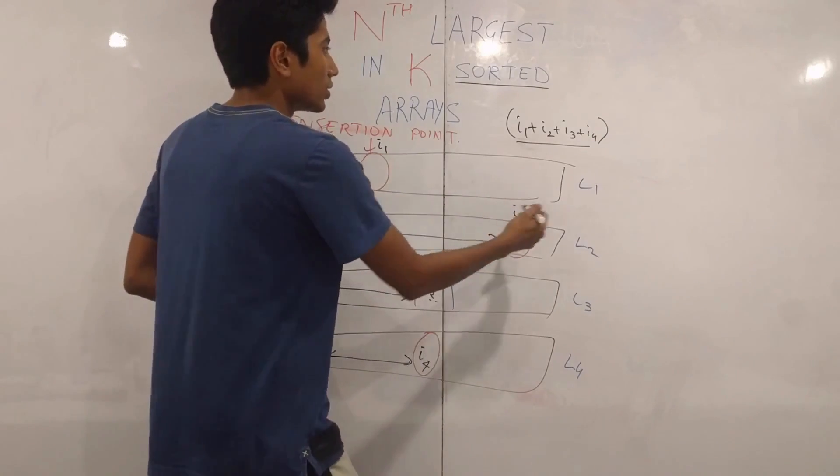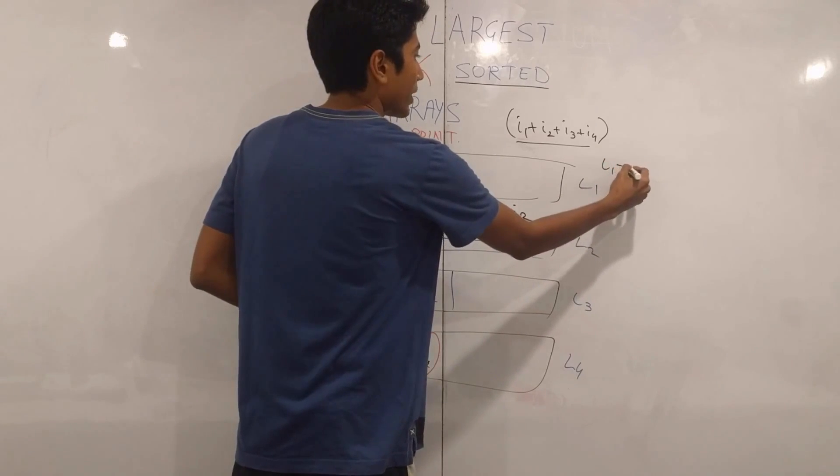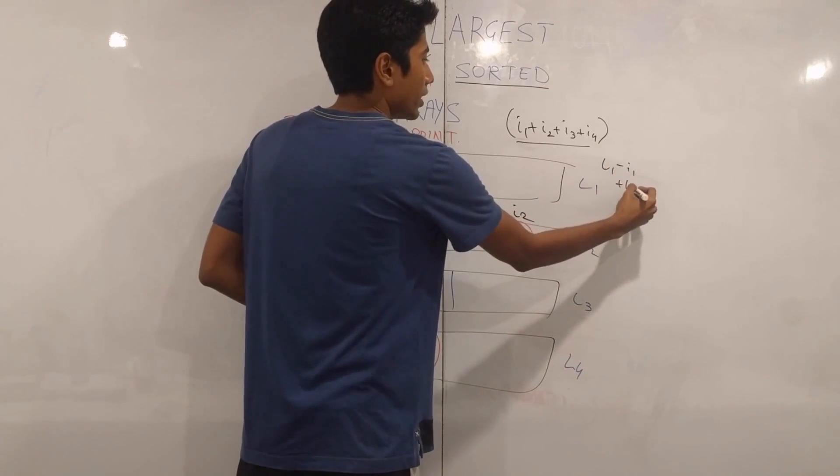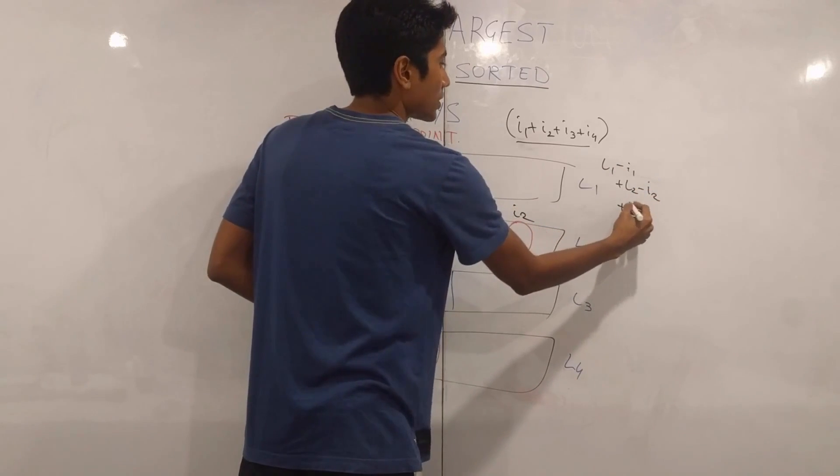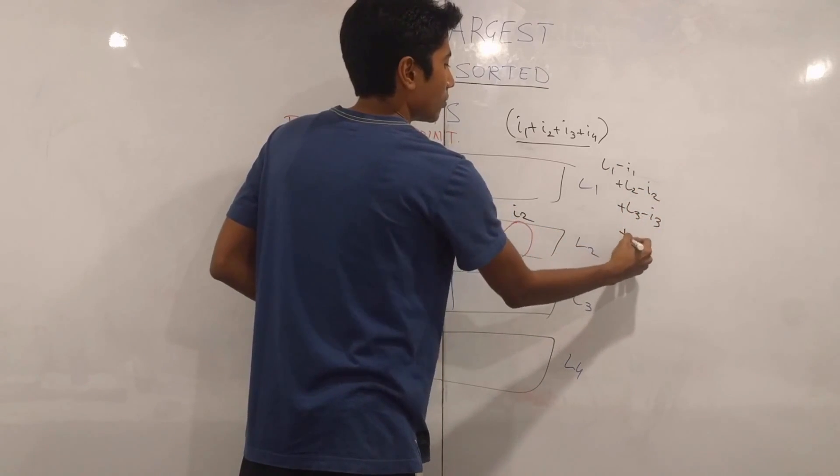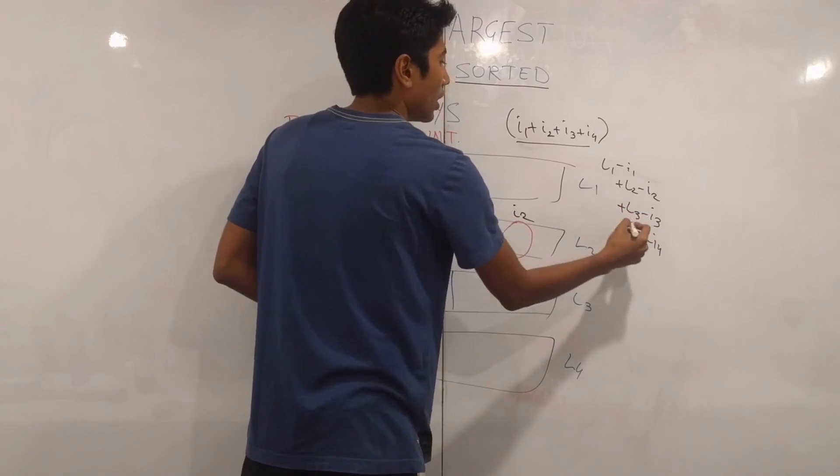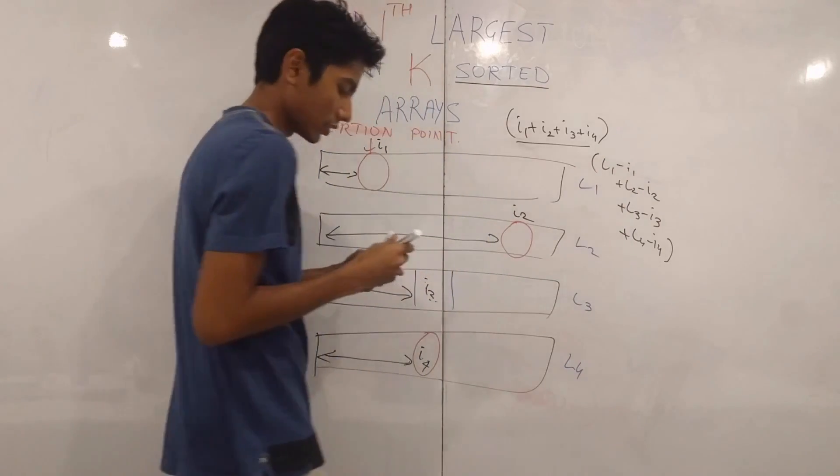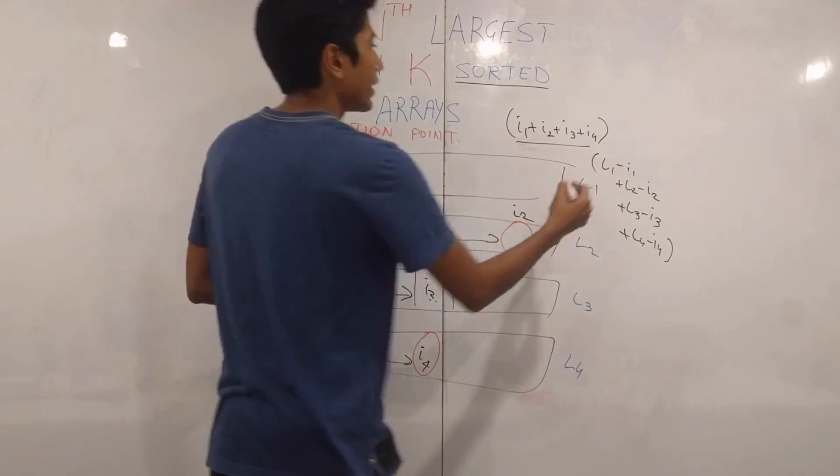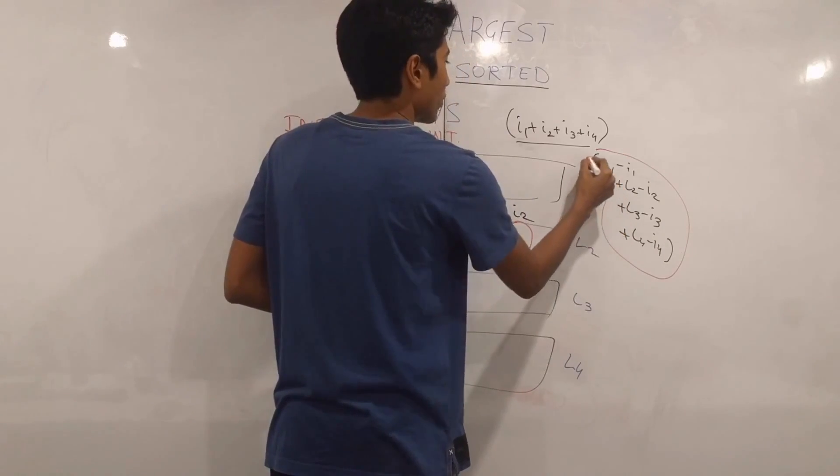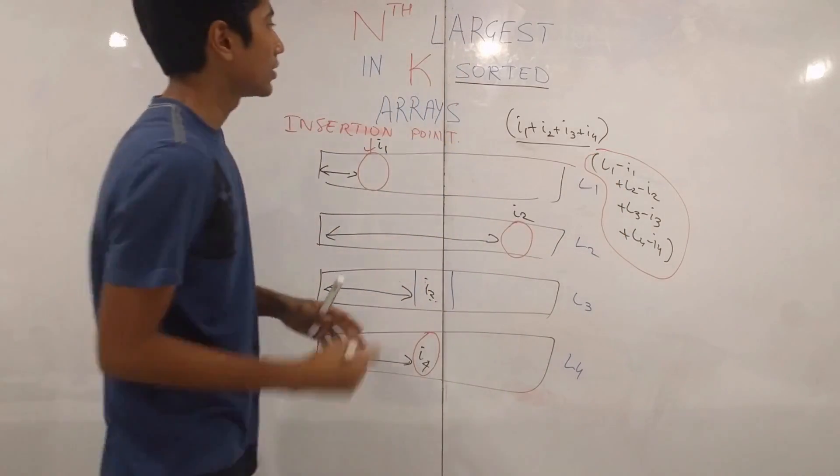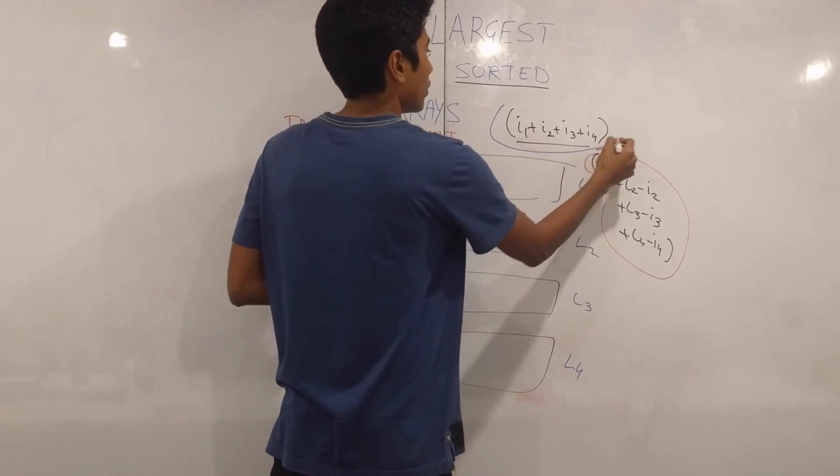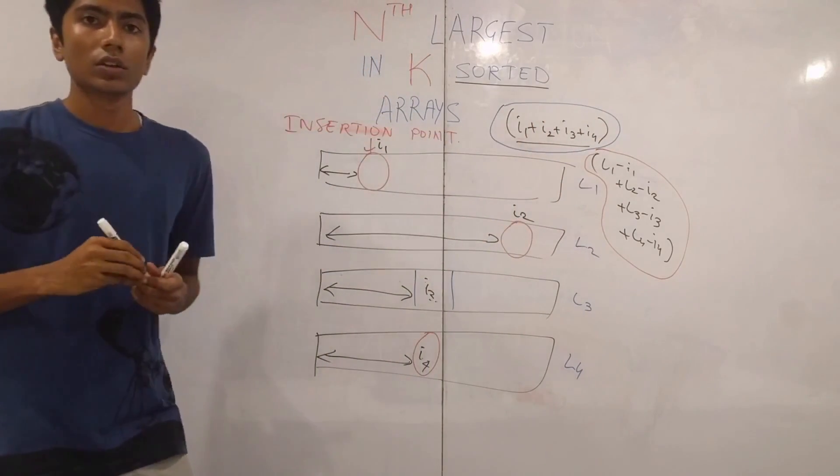Similarly, you can do l1 minus i1 plus l2 minus i2 plus l3 minus i3 plus l4 minus i4 as the indexes which are greater. So I will just mark greater with a circle of red and lesser is with a circle of blue. That's what we have.